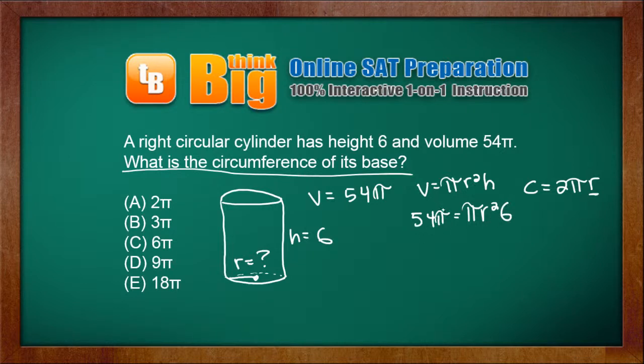The first thing that I would do is cancel out the pi's. So you get 54 equals r squared times 6. Divide both sides by 6. 54 divided by 6 is 9 equals r squared.